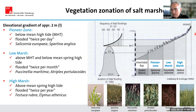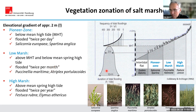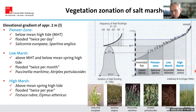In general, our vegetation zonation is quite straightforward along an elevational gradient of only about two meters. Below mean high tide is the pioneer zone, dominated by Salicornia and Spartina, flooded twice a day. Slightly higher is the low marsh community — more diverse — flooded during spring tides occurring roughly twice a month. The high marsh communities lie above mean spring high water and are flooded only during storm surges, perhaps twice a year. A simple model for students: all three zones flooded twice — per day, per month, or per year.